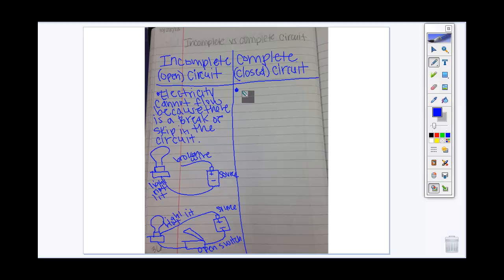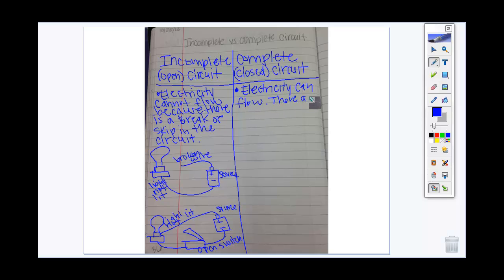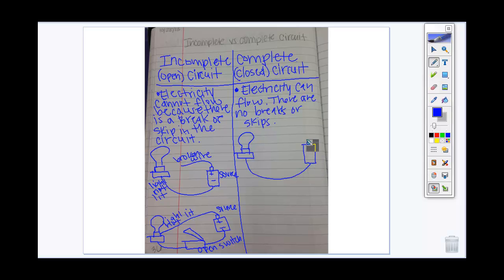On the other hand, when everything is connected, we have what we call a complete or closed circuit. Electricity can flow — there are no breaks or skips. Let's turn this one into a complete circuit. I'll have the same light source and my energy source. To complete it, I'm going to attach the wire. Now that everything is attached, the light bulb is going to light.